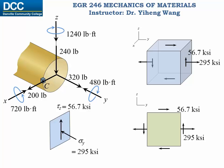Now the question is: point C represents a particle with no size, no shape, and no orientation. We chose this volume element to represent this particle, and we chose the orientation because it was the most convenient. But what if the orientation at point C changes? Does the state of stress change as well?